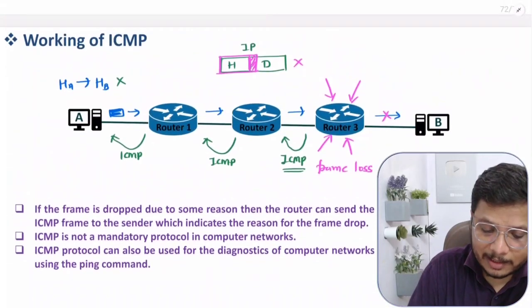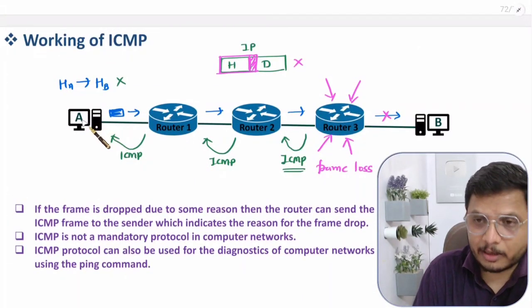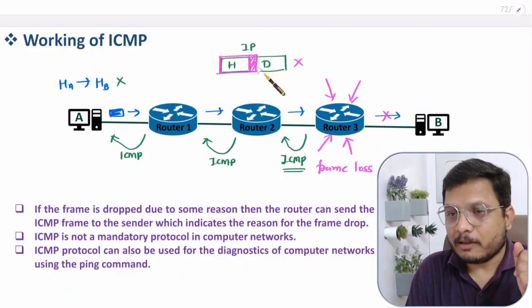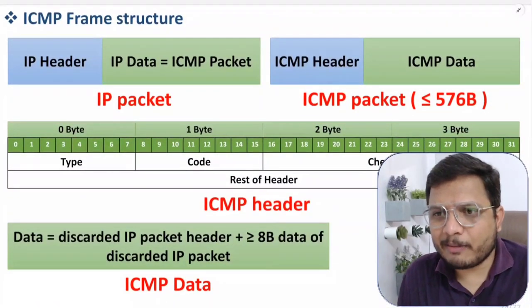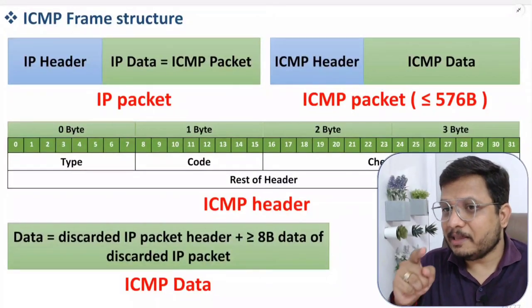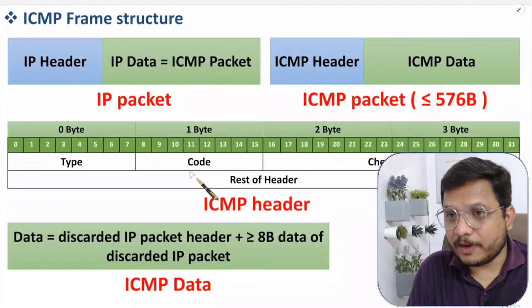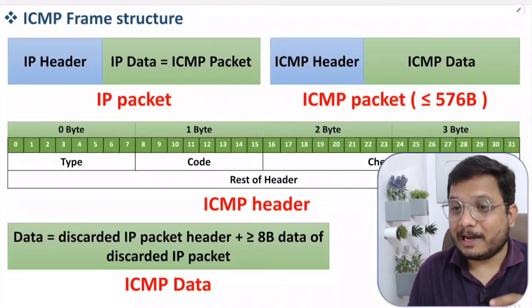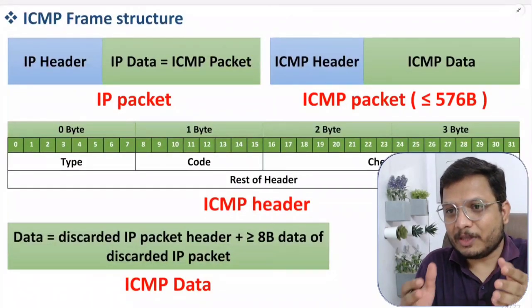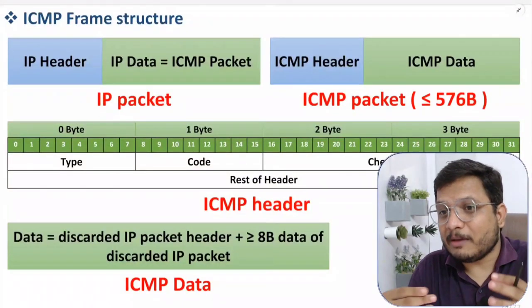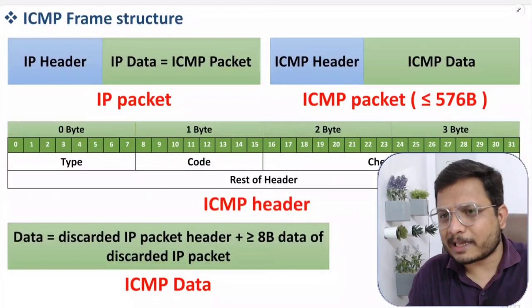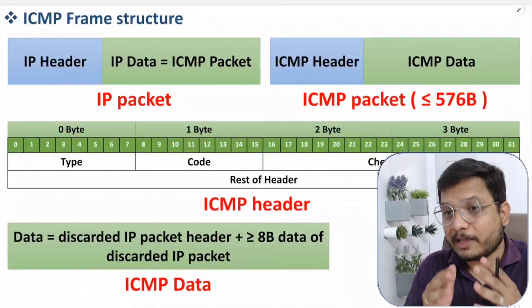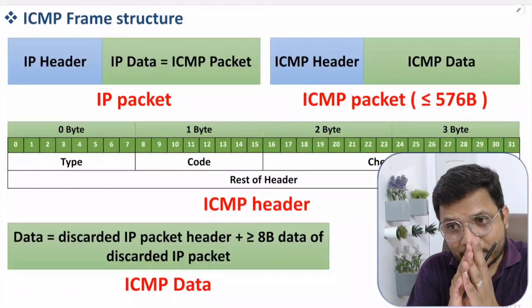We forward this information back to Host A to tell it which frame was lost and that it needs to retransmit. That is how the frame structure works. In the next video I'll explain the type and code field in detail, covering the various reasons a frame may get lost and how we can diagnose a network to check whether it is working properly using ICMP protocol. I hope it is clear — if you have any questions, please note them in the comment section.